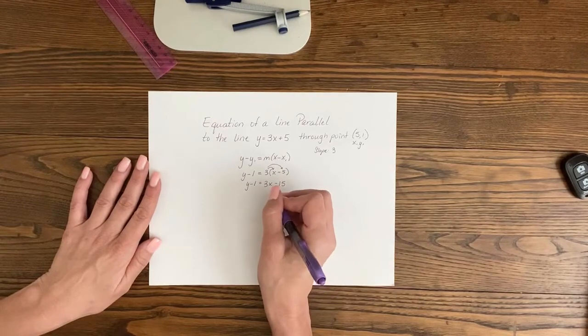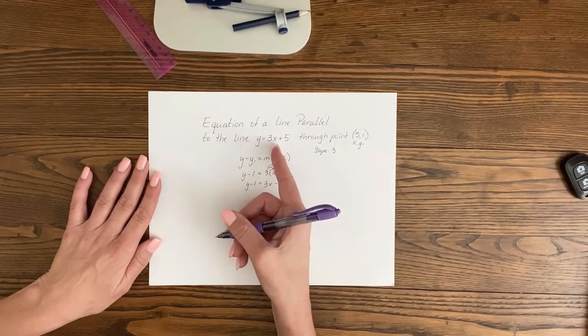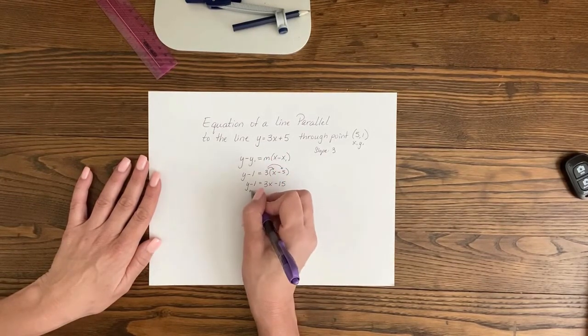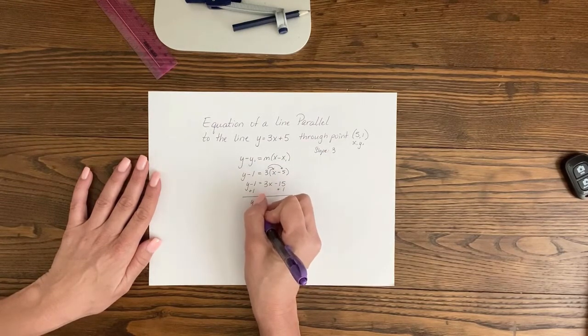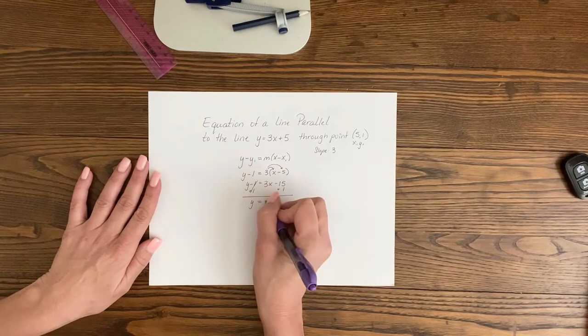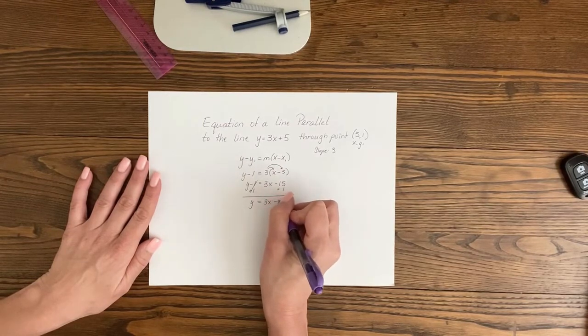Now we have to get this in slope-intercept form. So we are going to add 1 to each side of our equation, giving us y equals 3x minus 14.